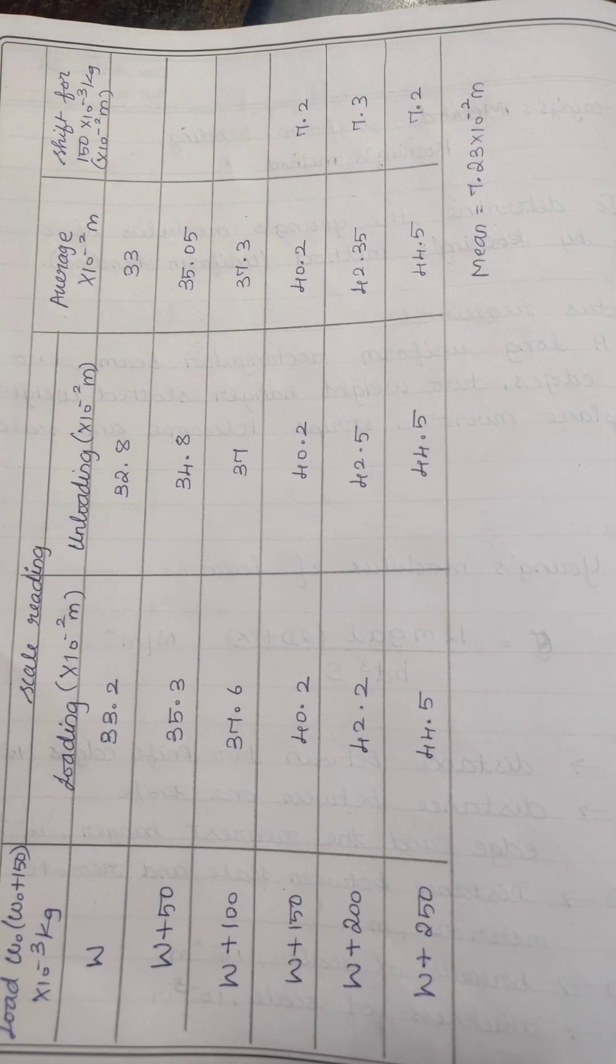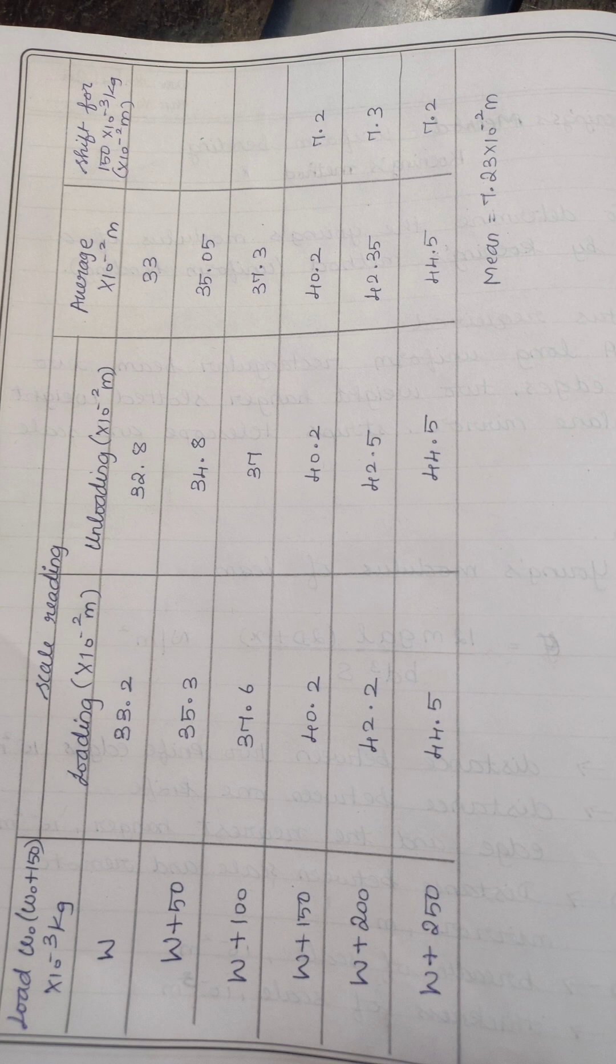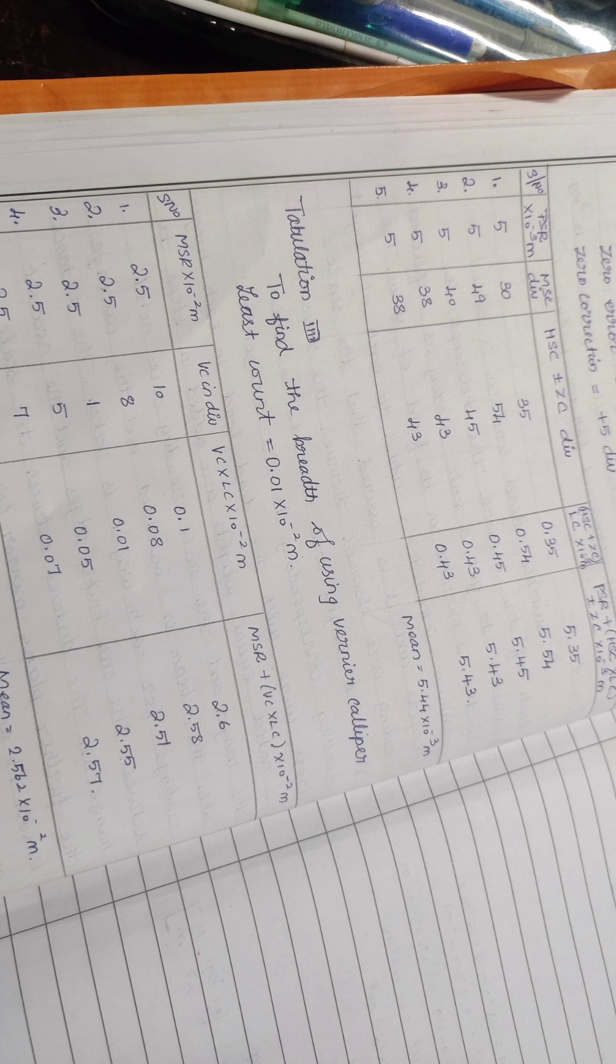Then we have to take the reading as usual - for weight w, note how much reading the scale is showing. Then after adding the weight w+50, w+100, w+150, we take the readings.